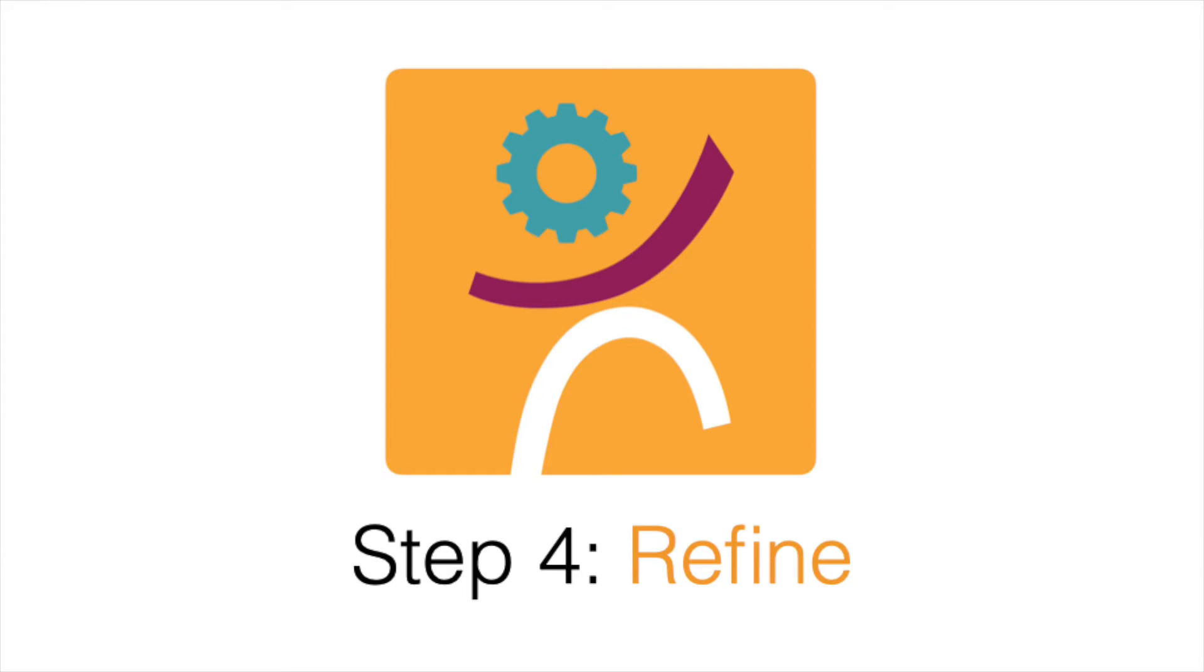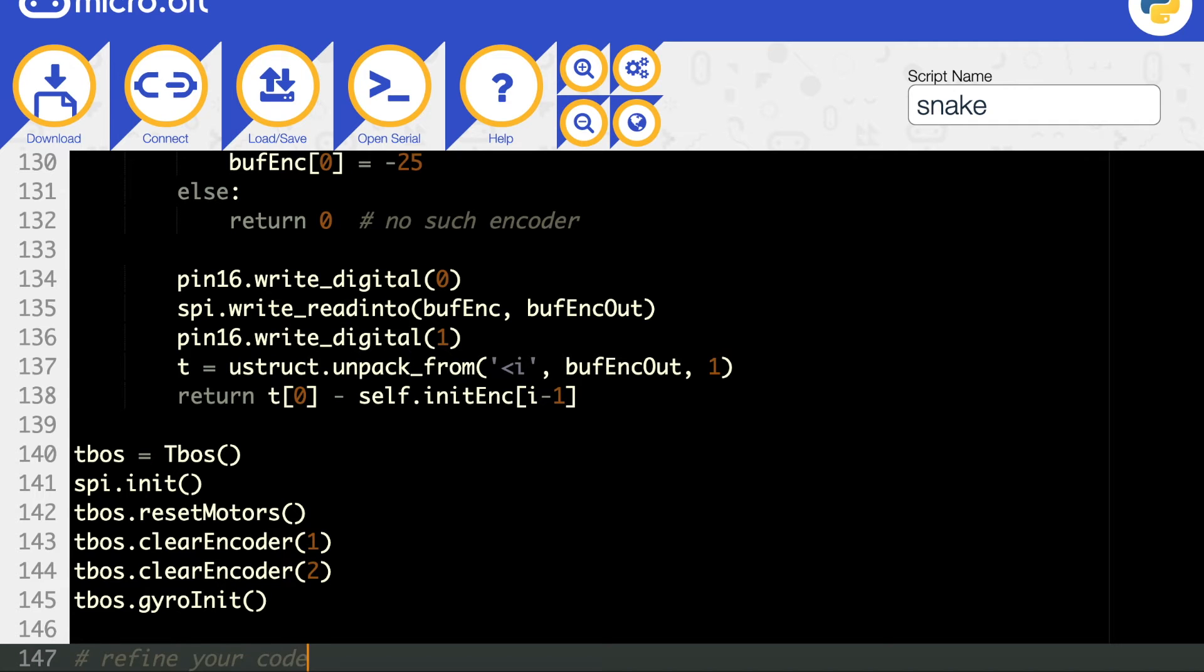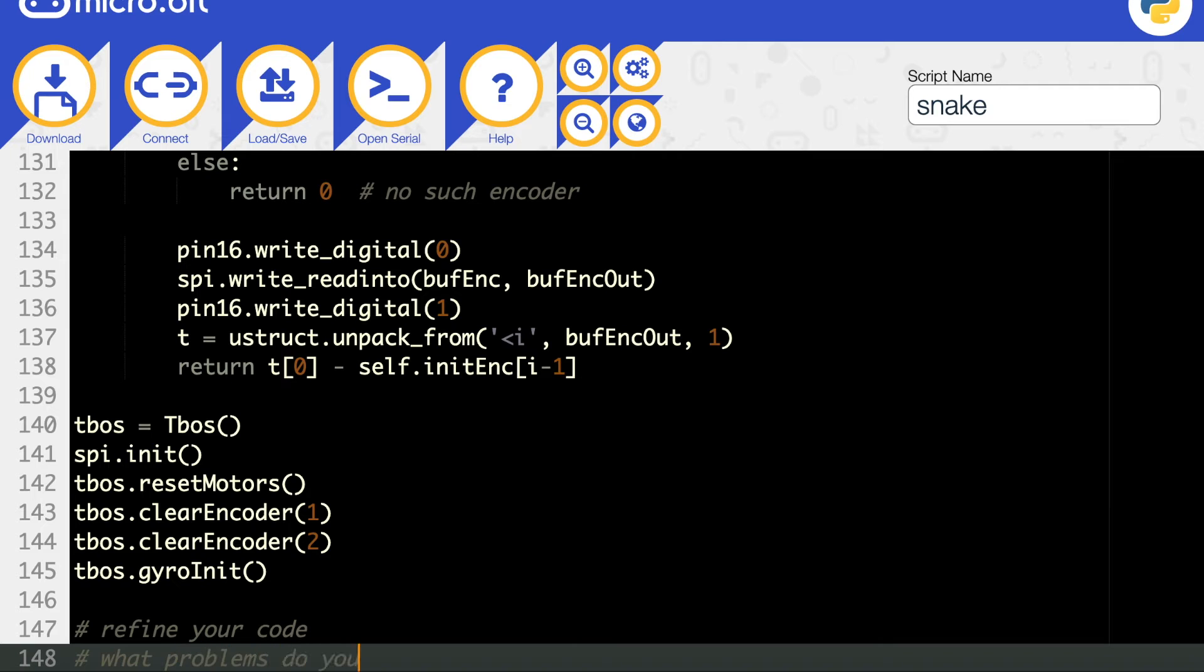Step 4: Refine. Try to identify the bugs, if any, that are preventing your code from working. Implement code methods to fix them.